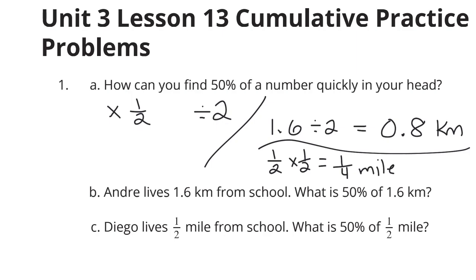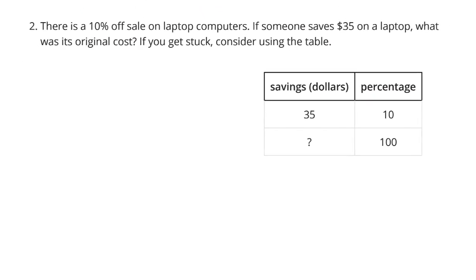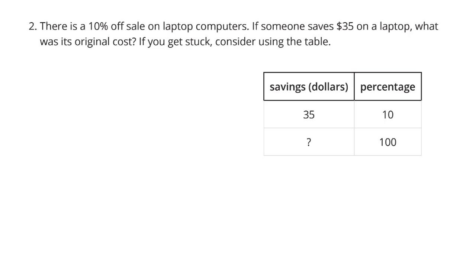Continuing on to question 2. There is a 10% off sale on laptop computers. If someone saves $35 on a laptop, what was its original cost? If you get stuck, consider using the table. Well, there's a 10% sale. Someone saved $35. So $35 is that 10%. That's what our table is showing here. So how can I get from 10 to 100? Well, multiply by 10. So we can take 35 and multiply by 10 to get $350 for that laptop.